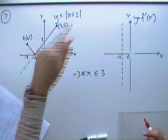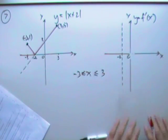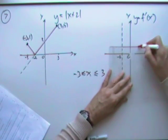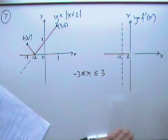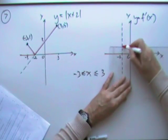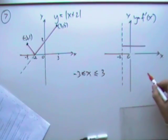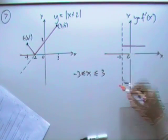After -2, you've got a line going up at 45 degrees. That's a gradient of 1, so that would just be a horizontal line of value 1. I'll put the 1 in,